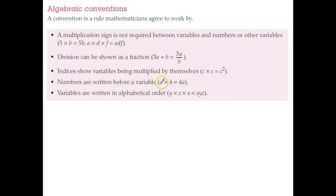If we're multiplying a variable times a number, the convention is to write the number first and the variable second. We don't write the multiply sign, we just write 4a. You could write a4 and I'd understand what you mean, but the convention is to write the number before the letter.